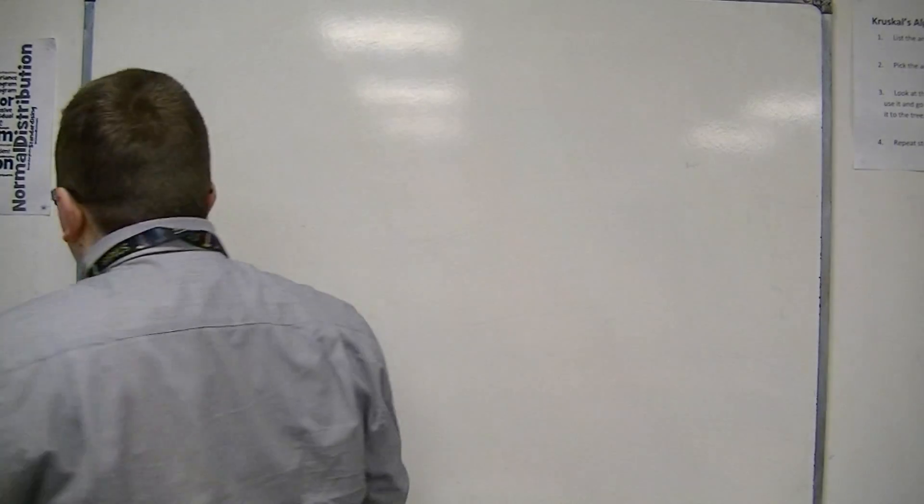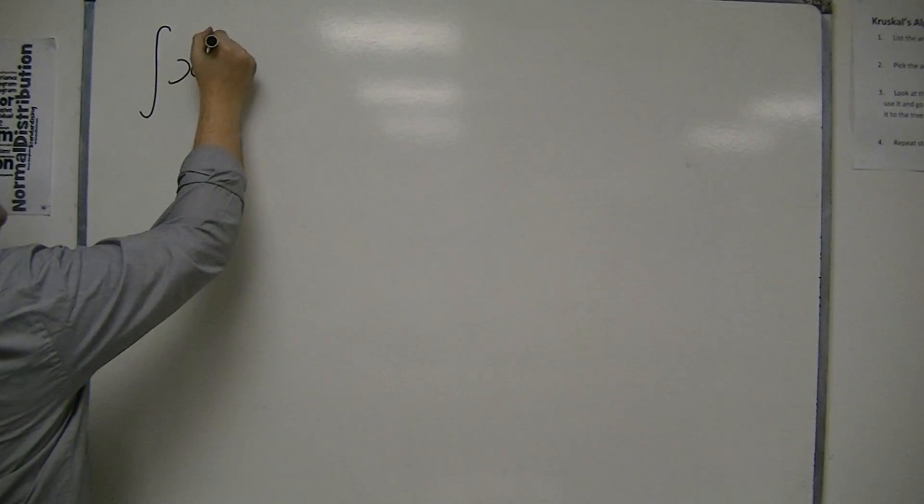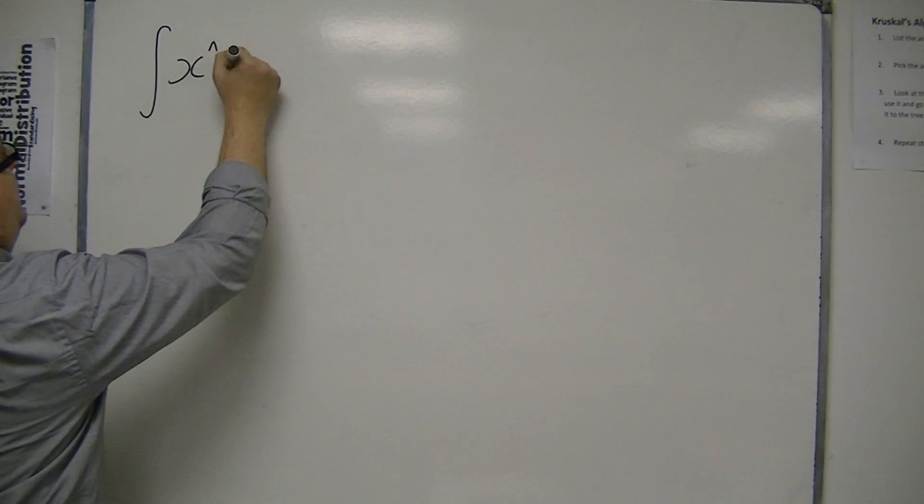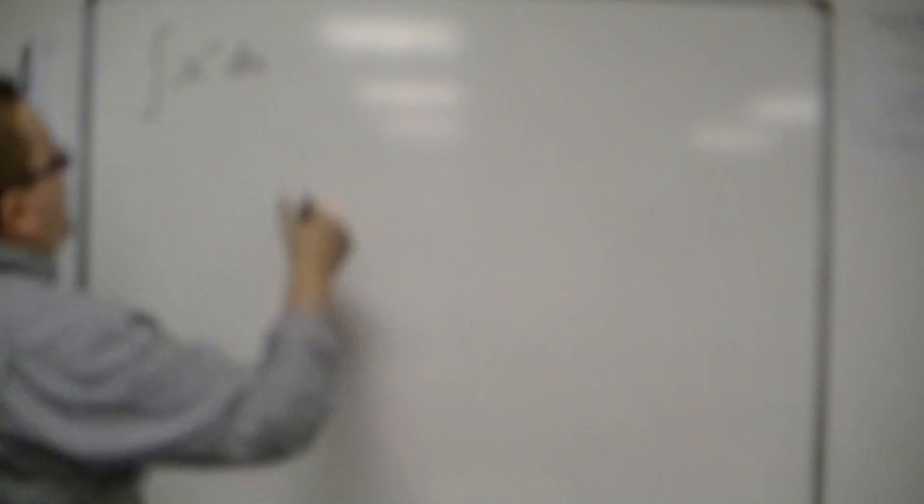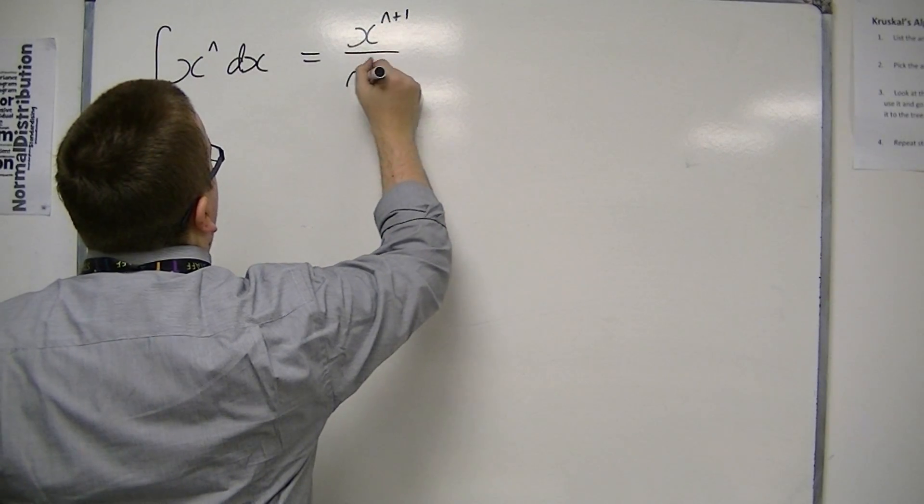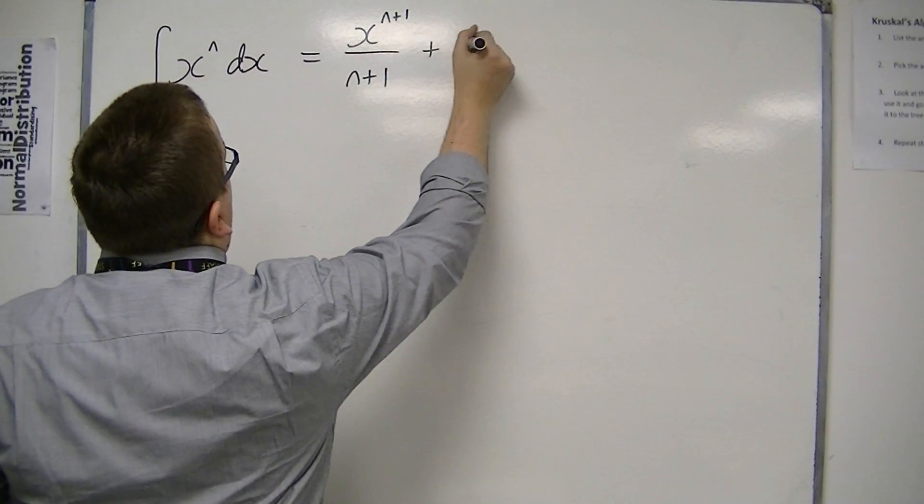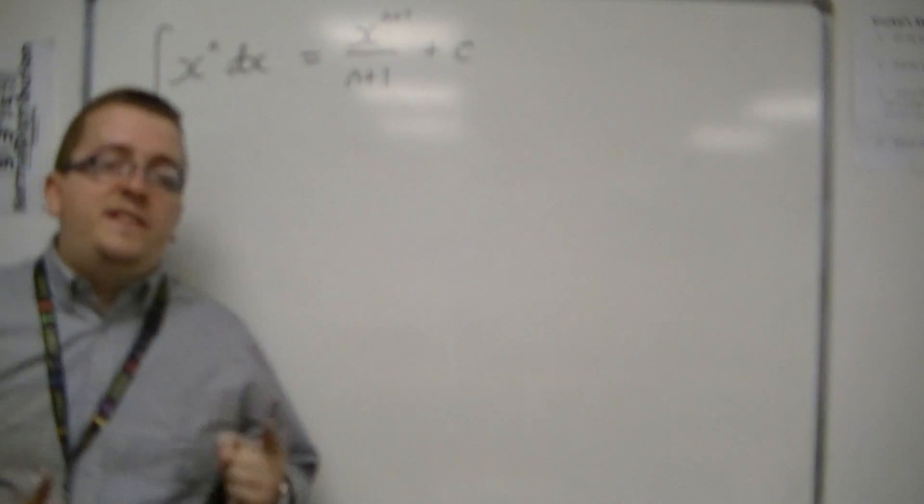If you have the integral of x^n dx, then when integrating, we add 1 to the power and divide by the new power. And then we also have this constant of integration because we're working with an indefinite integral.